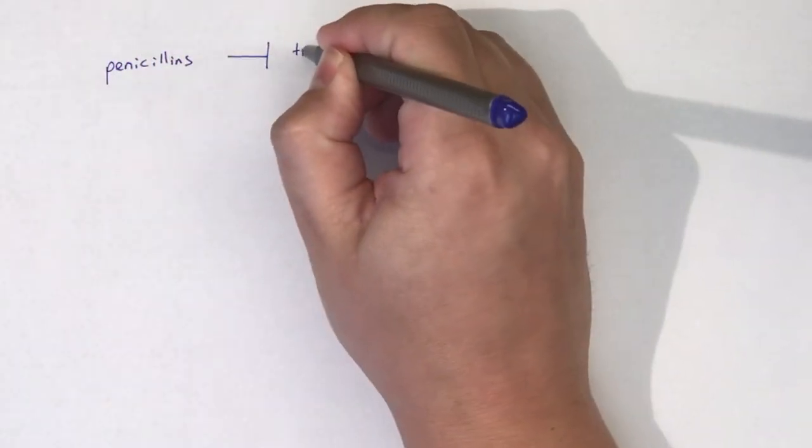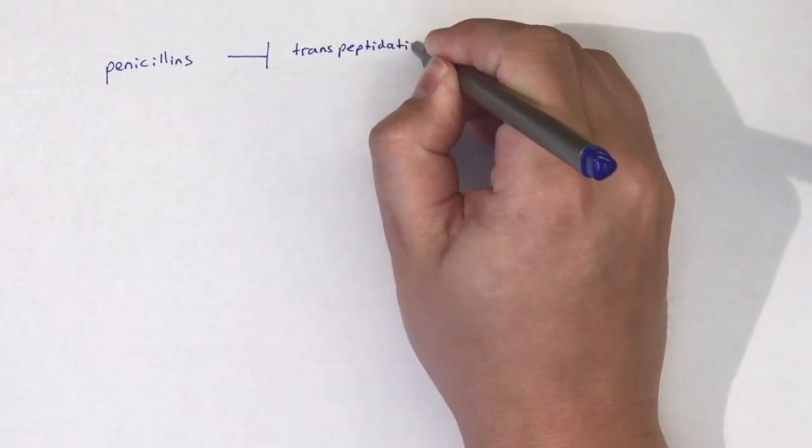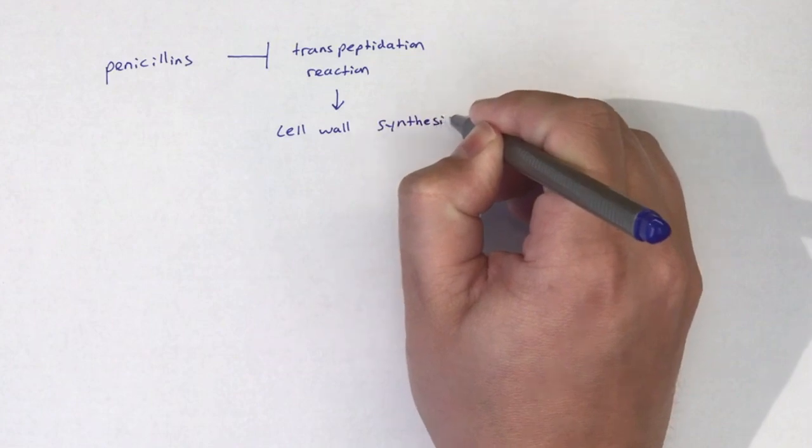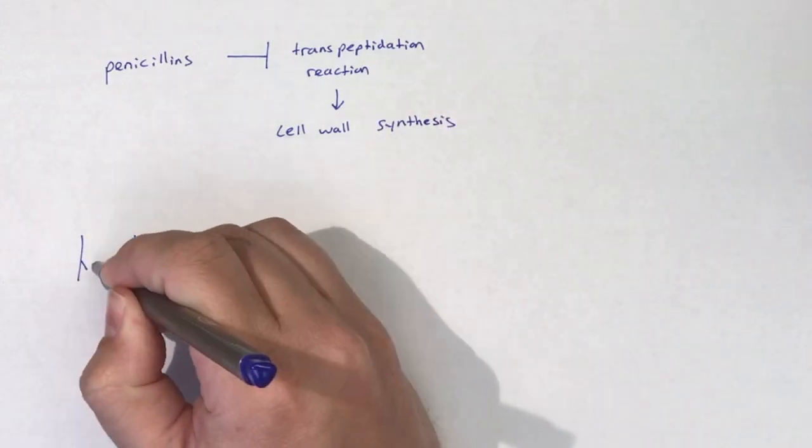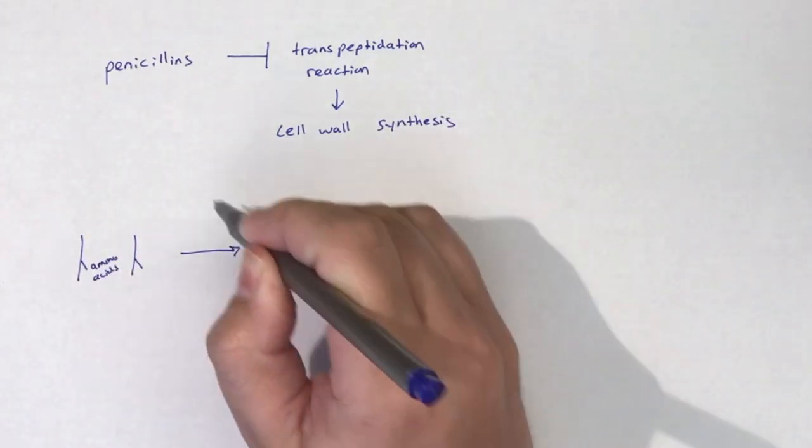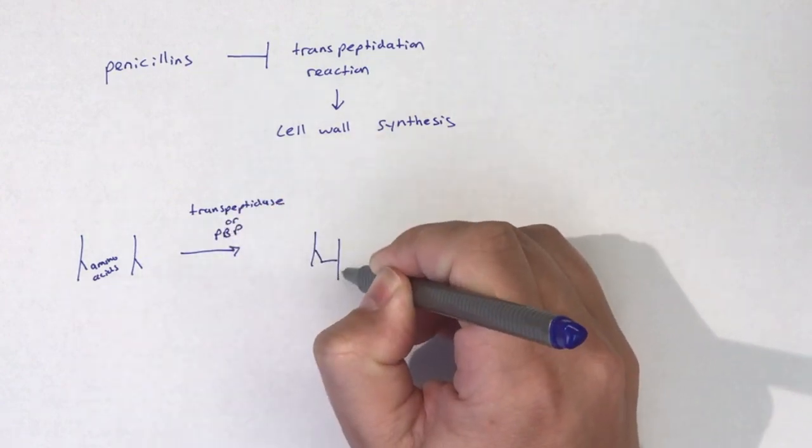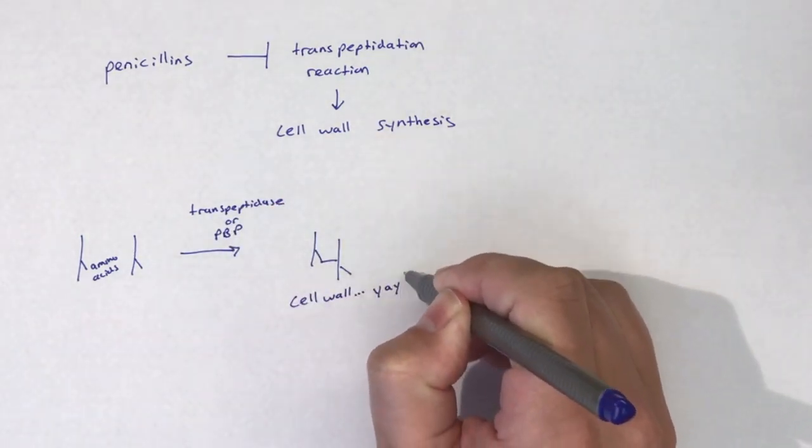Anti-pseudomonal penicillins work just like the other penicillins, in that they are competitive transpeptidase inhibitors. This means that anti-pseudomonal penicillins are cell wall synthesis inhibitors and are most effective against dividing bacteria.